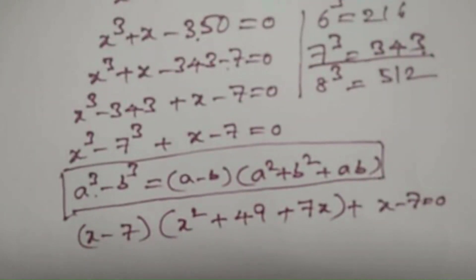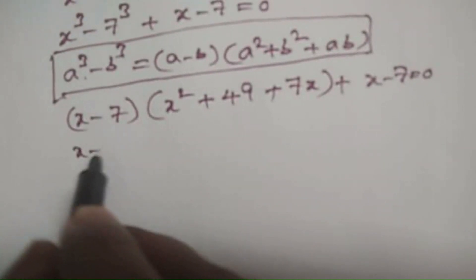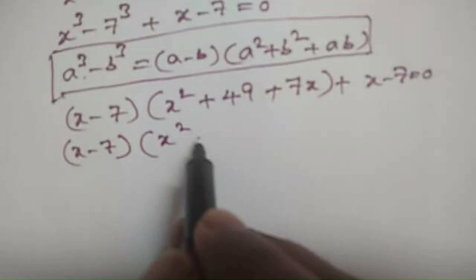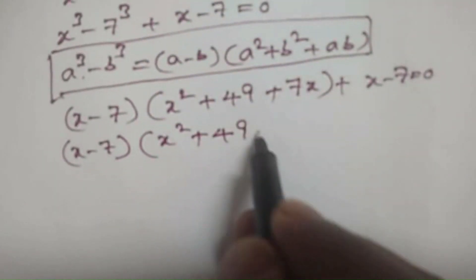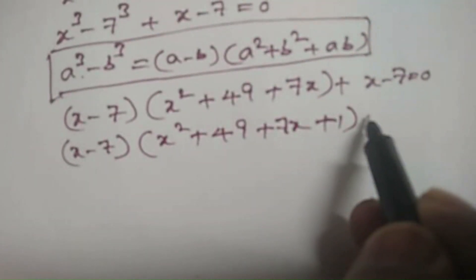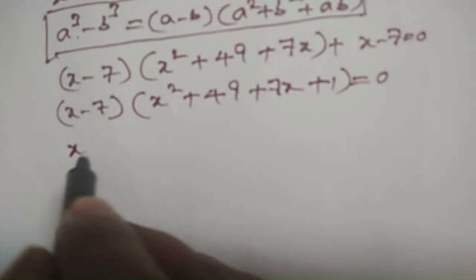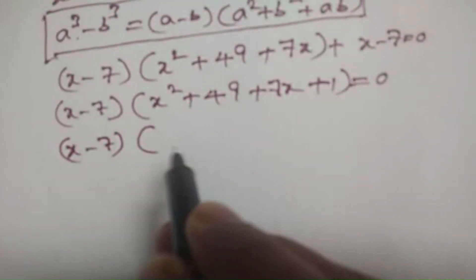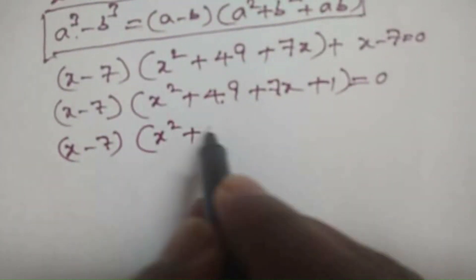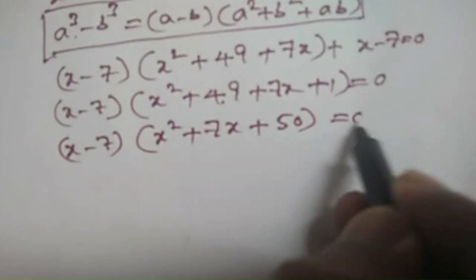Now from this, take x minus 7 as common: x minus 7, into x squared plus 49 plus 7x plus 1, which gives x minus 7, into x squared plus 7x plus 50 is equal to 0.